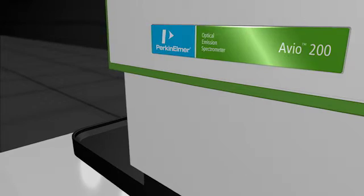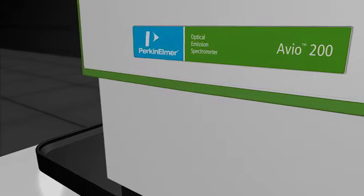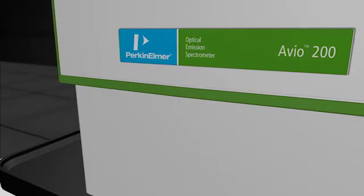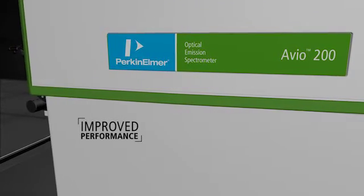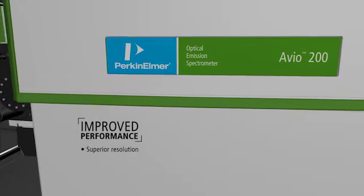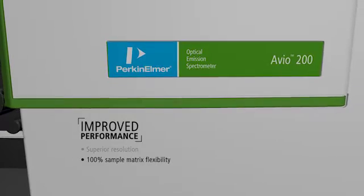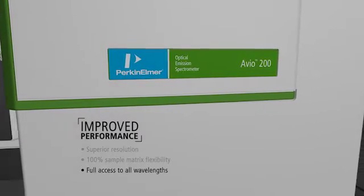Backed by the expertise and insight of a global leader in atomic spectroscopy, the Avio 200 ICP makes high performance analysis attainable for all labs. It delivers superior resolution and 100% sample matrix flexibility with full access to all wavelengths.